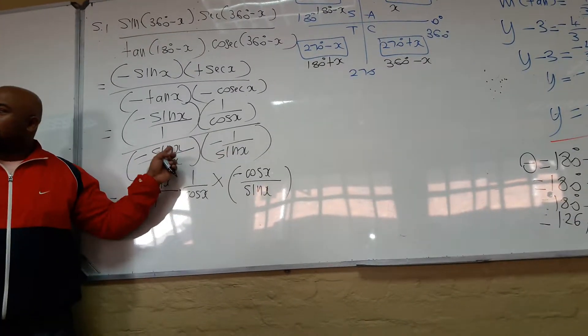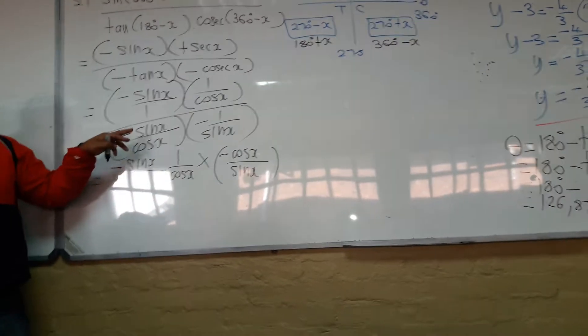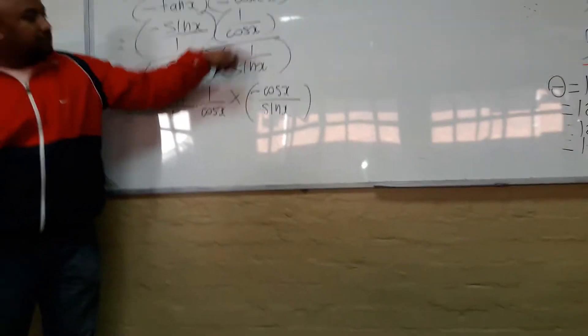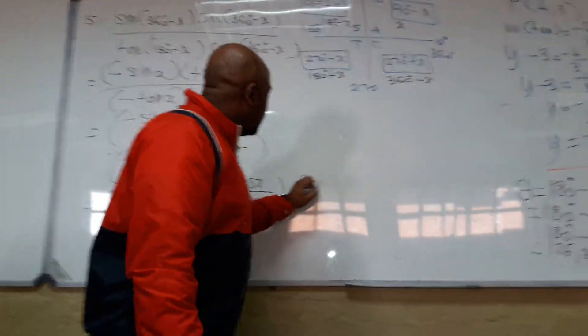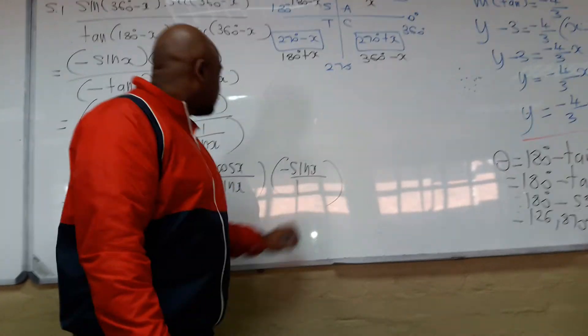I could have cancelled there in the bottom. I'm just going to do it all in one. Obviously I can see sine and sine will cancel. But I'm just getting rid of this division sign first. Minus 1 over sine will become what? Minus sine over 1.